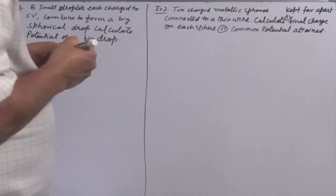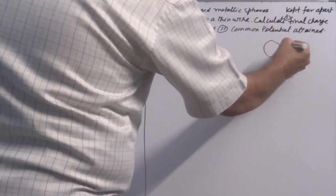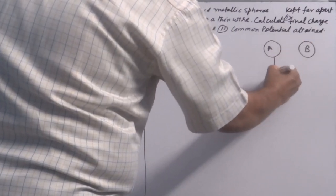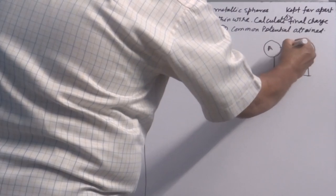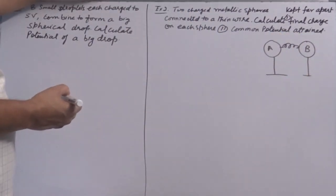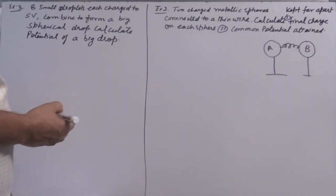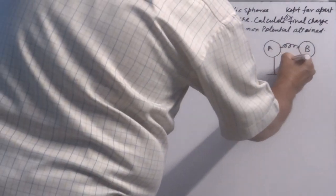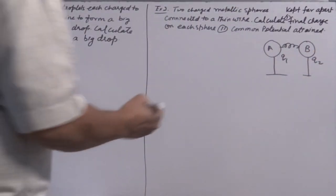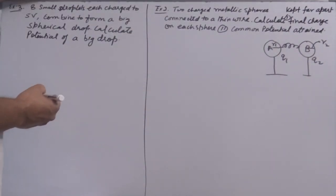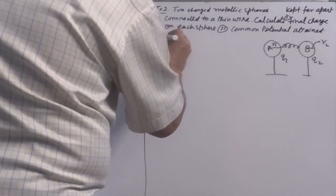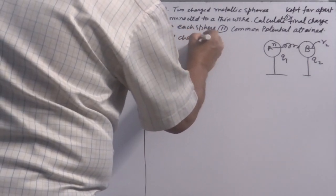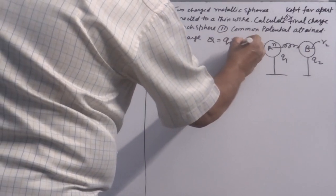Let's do two questions. Two charged metallic spheres kept far apart are connected by a thin wire. Consider two spheres A and B: sphere A carries charge Q1 and sphere B carries charge Q2. The radius of sphere A is R1 and the radius of sphere B is R2. The total charge is Q = Q1 + Q2.